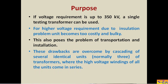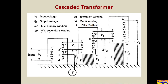Now let us see how this cascaded transformer unit is arranged. You can see here there are three cascaded transformers — this is the first unit, this is the second unit, this is the third unit. The first unit is kept on the ground; the second unit is on a post-type insulator, basically isolated from the ground. The third unit is also isolated from the ground and therefore kept on an insulator.